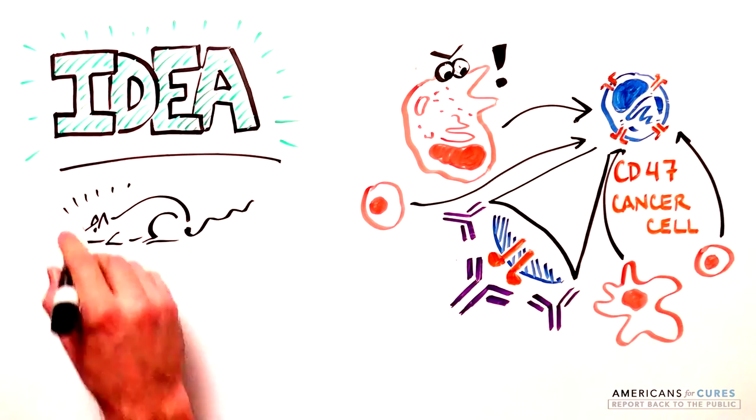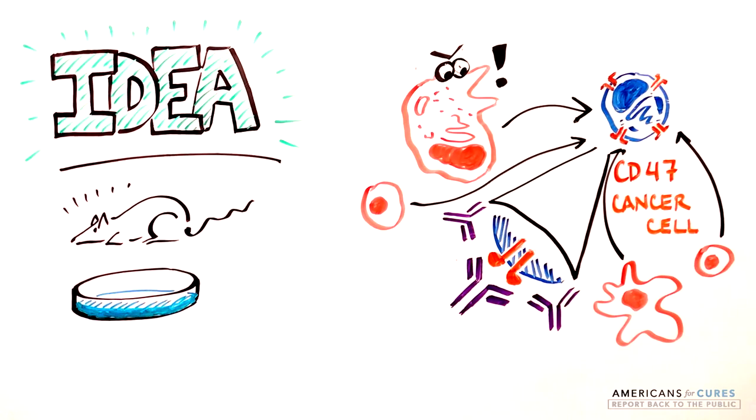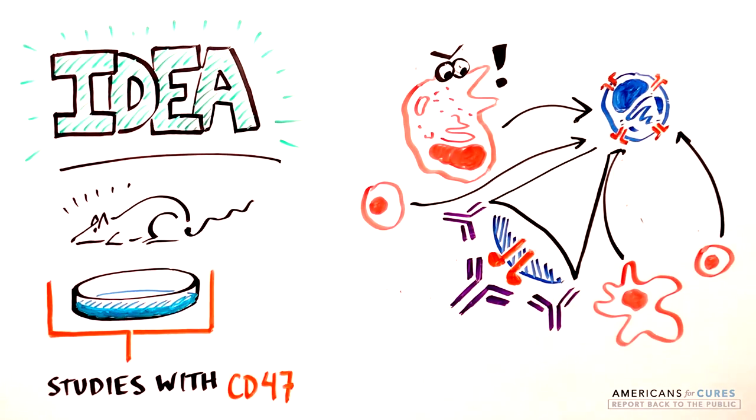Studies in Petri dishes and mice suggest that this actually happens. When the CD47 antibody is present, most cancer cells are destroyed by macrophages, those big eating immune cells.